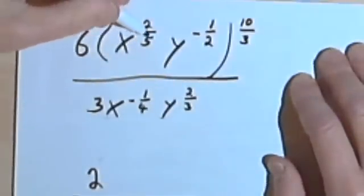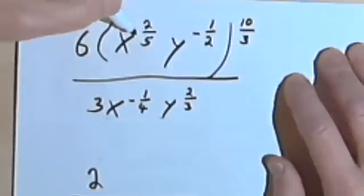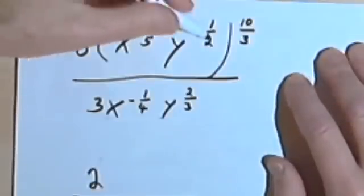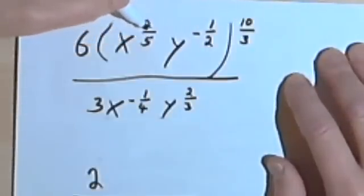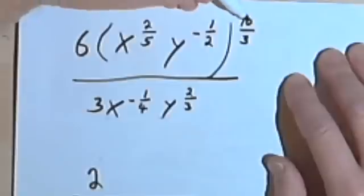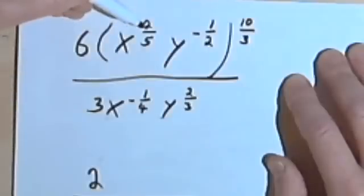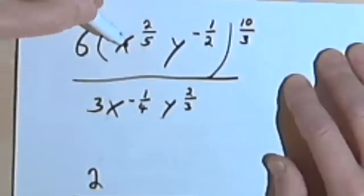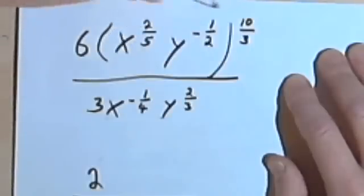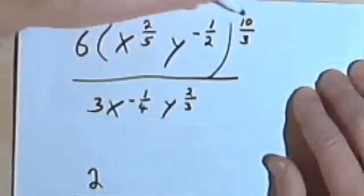Now let's look at x to the 2/5, y to the negative 1/2, raised to the 10/3 power. Remember, if you're confused about what to do with this, just ask yourself what you would do if these rational exponents were whole numbers. You would take the exponent outside the parentheses and multiply it by each of the exponents inside the parentheses. So that means I want to take x to the 2/5 raised to the 10/3 power and multiply 2/5 times 10/3.